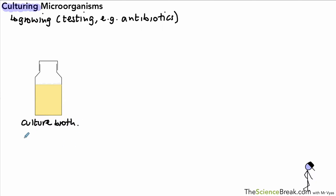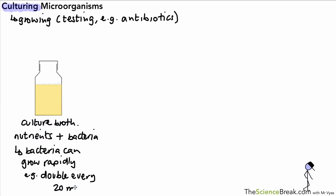One way of doing this is using what we call a culture broth. It's a bottle that contains nutrients and the bacteria that you want to grow. We have those nutrients in the right amounts, the right concentrations for the bacteria, so that bacteria can actually grow as rapidly as possible. In the right conditions, the bacteria can double their numbers about every 20 minutes if we have the right nutrients and the right temperature.